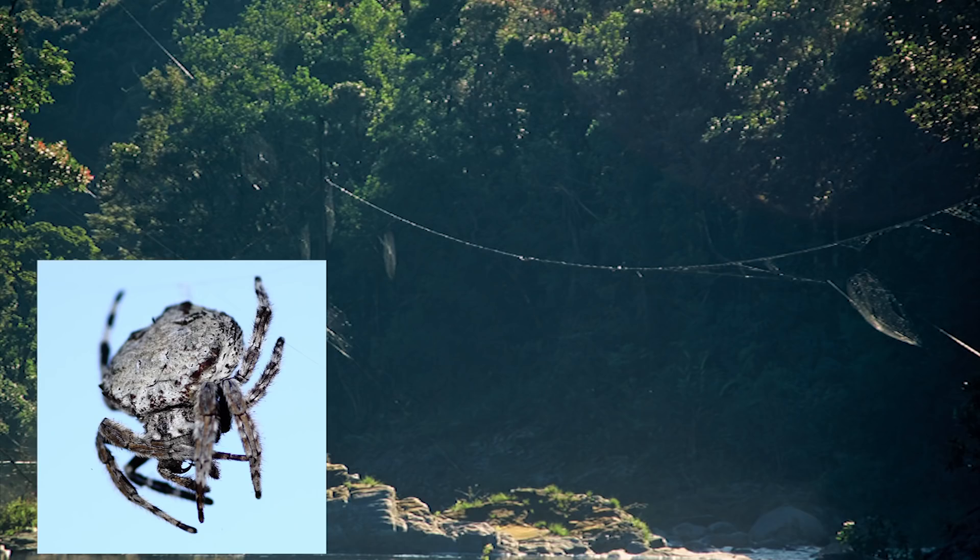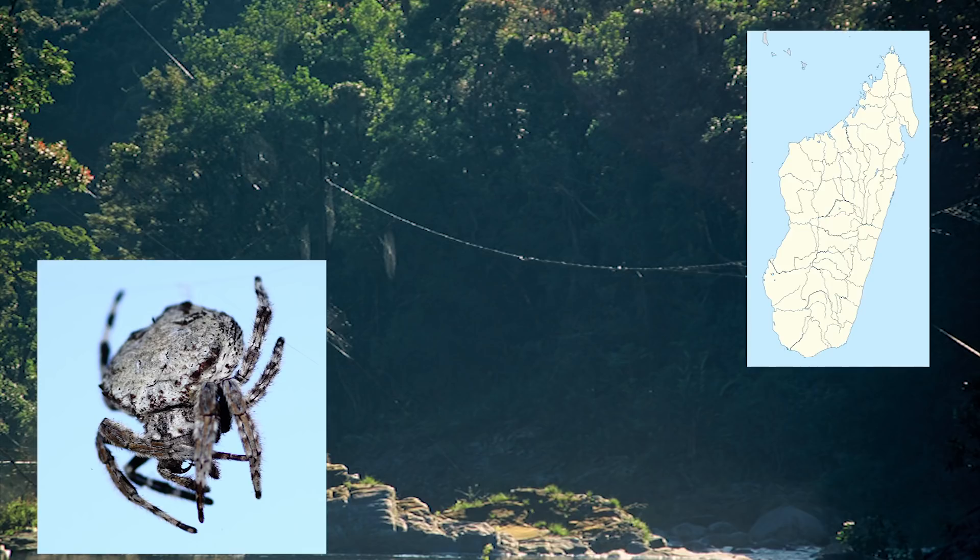King among these is the Darwin's bark spider, whose silk is 10 times stronger than Kevlar, which lets it spin webs up to 80 feet wide. Unfortunately, their silk sequence isn't known, and getting one is sorta hard since they live in Madagascar, so I won't be getting one anytime soon.